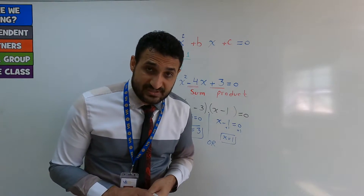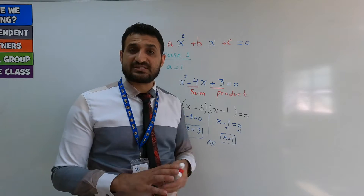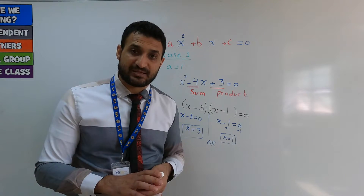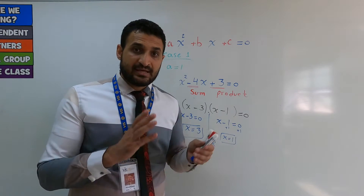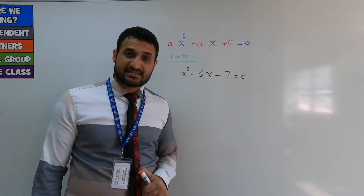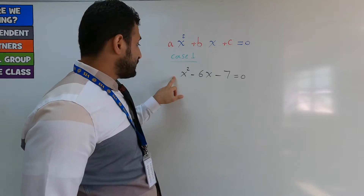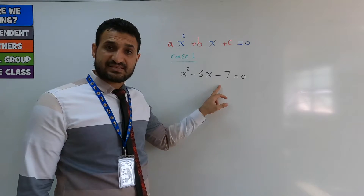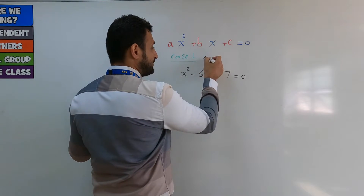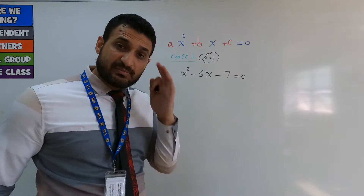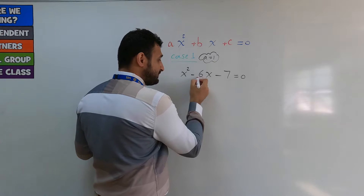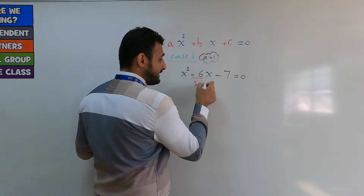The solutions are x = 3 and x = 1 — we call them the roots. This method is factoring using sum and product when a equals 1. Let's solve another example: x² − 6x − 7 = 0. Here a is 1, b is negative 6, c is negative 7. Since a is 1, we use the first case.